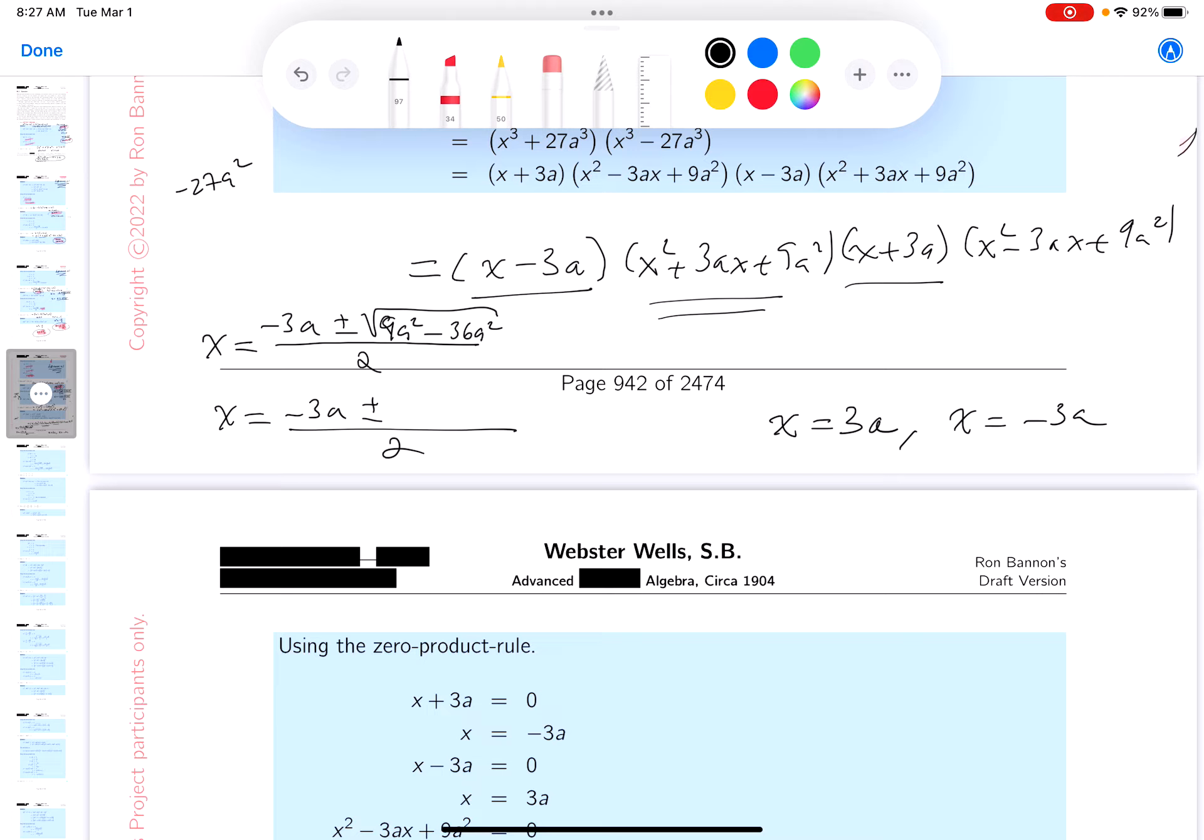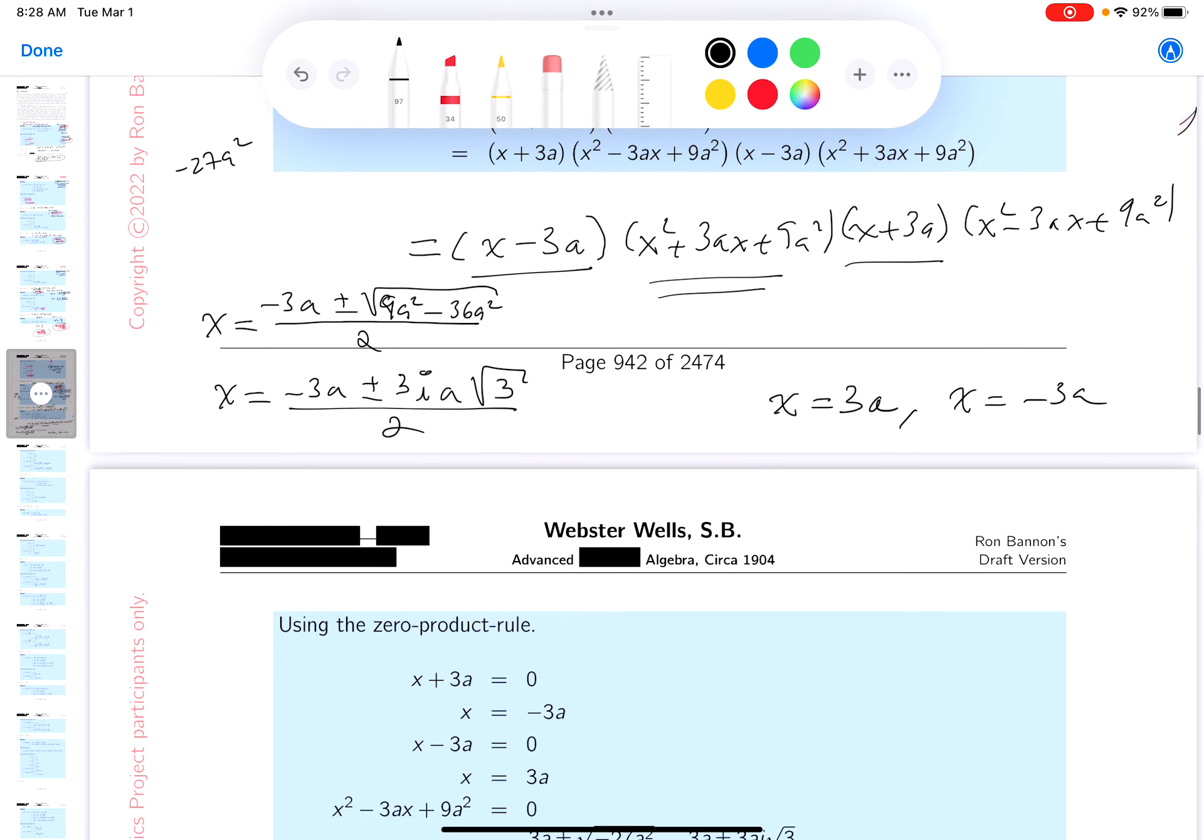That would be a 9, which is 3i. And you get an a. And then you get a root 3. All right? So I'm going to claim that one's done.